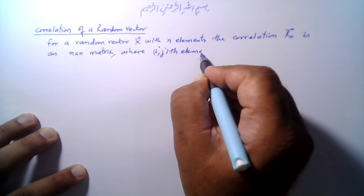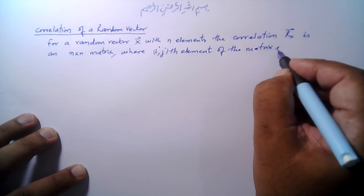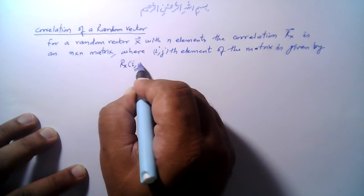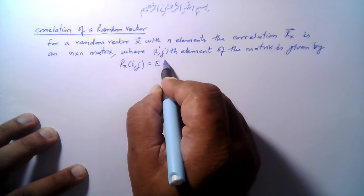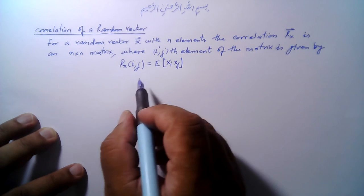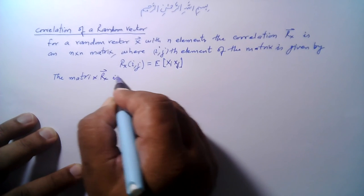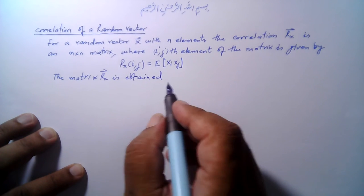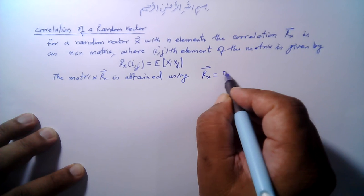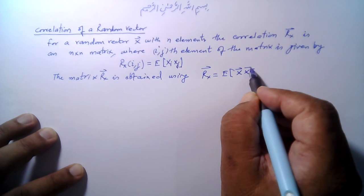The (i, j) element of the matrix is given by R_x(i,j) = E[x_i · x_j]. The matrix R_x-bar is obtained using the formula R_x-bar = E[x-bar · x-bar^T], where T denotes the transpose.